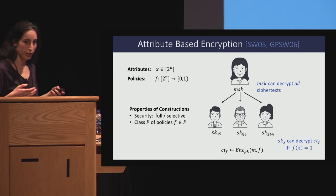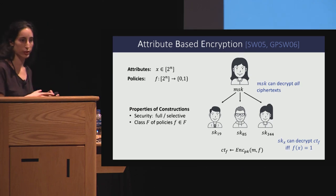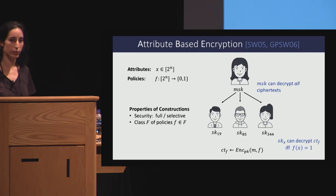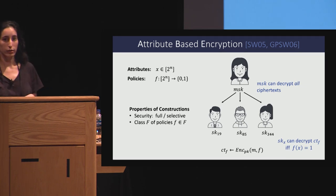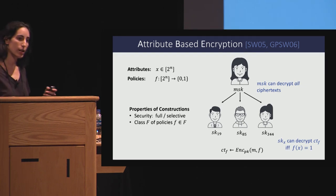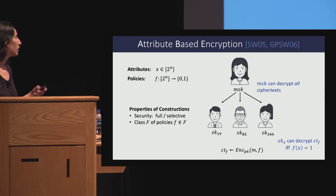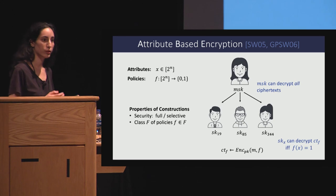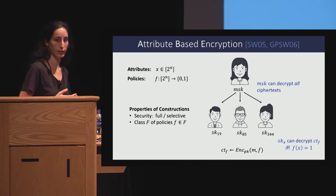Given a candidate ABE construction, in this work we focus on two properties. The first is the security guarantee — there is full security and also a relaxed notion called selective security. The second property is the supported class of policies we can associate to the ciphertext. We want it to be as expressive as possible so we can have more complex access structures.